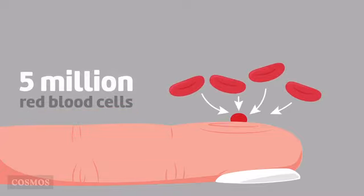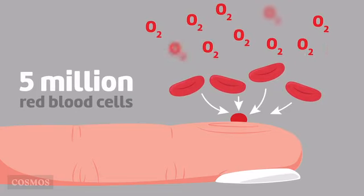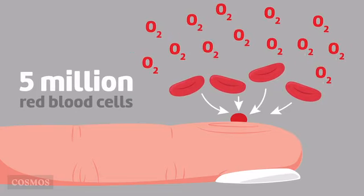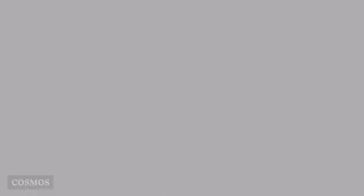And each drop of blood has around 5 million red blood cells, so the blood can carry much more oxygen than if the oxygen simply dissolved in the plasma.